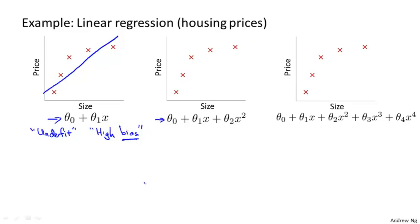Now, in the middle, we could fit a quadratic function to the data, and with this data set, if we fit a quadratic function, maybe we get that kind of curve, and that works pretty well. And at the other extreme would be if we were to fit, say, a fourth order polynomial to the data. So here we have five parameters theta zero through theta four, and with that, we can actually fit a curve that passes through all five of our training examples. We might get a curve that looks like this, that on the one hand, seems to do a very good job fitting the training set, and as it passes through all of my data, but this is still a very wiggly curve. It's sort of going up and down all over the place, and we don't actually think that's such a good model for predicting housing prices.